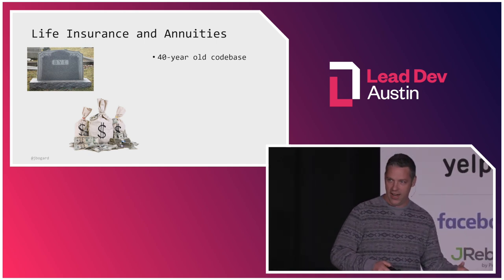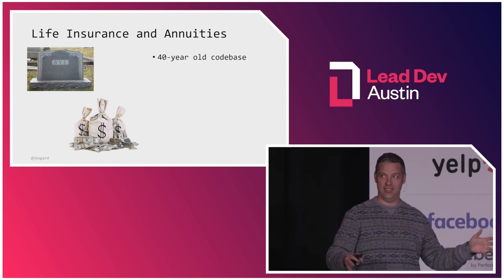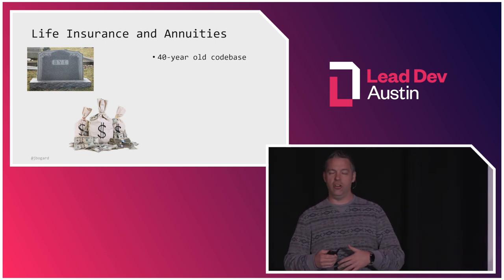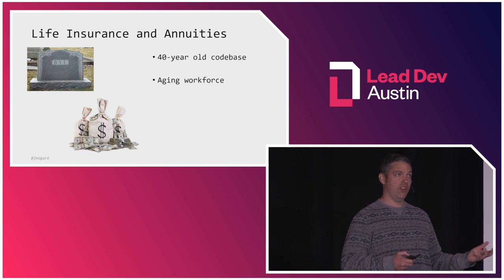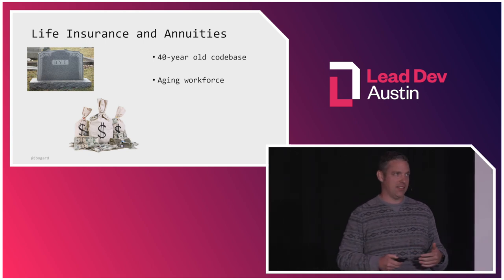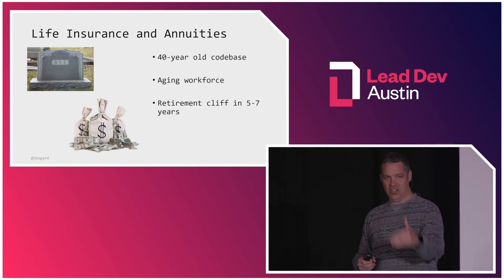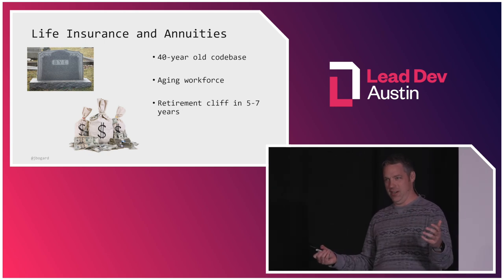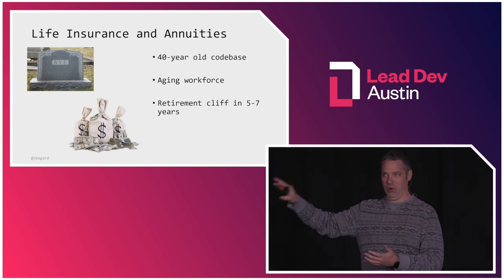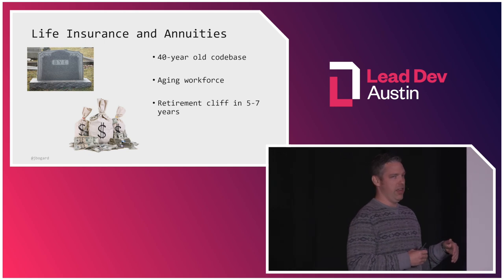This system had got the company to where it was today. They were the leader of their industry because they had this system for decades that none of their competitors had. But the system had started to show its age and could no longer keep up with the business. The existing code base started in the mid-70s — over 40 years old. The workforce responsible for maintaining it was also aging out. Many developers were reaching a retirement cliff in five to seven years. They were pensioned, and once they hit 55, they were gone. A huge risk to the company was all that knowledge leaving with them.